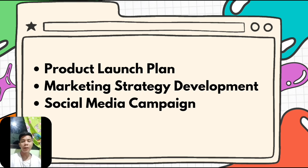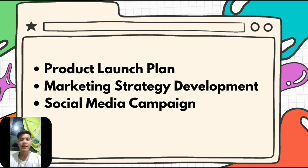Here are examples of marketing planning. First, product launch plan. When introducing a new product or service to the market, a comprehensive marketing plan is crucial. This plan includes market research, identifying the target audience, setting marketing objectives, creating a marketing budget, determining promotional activities such as advertising, public relations, and social media campaigns, and lastly establishing metrics to measure success.